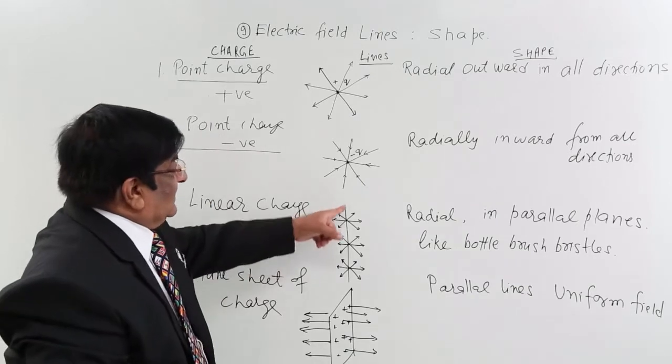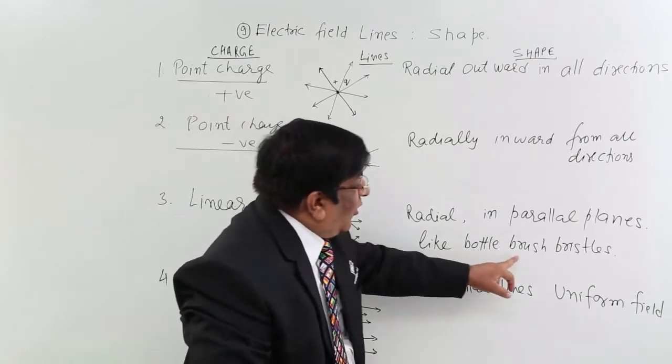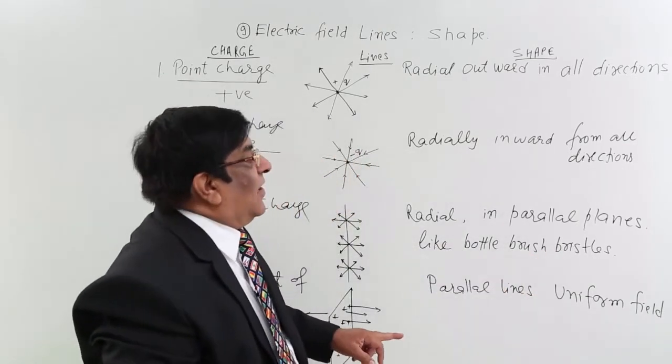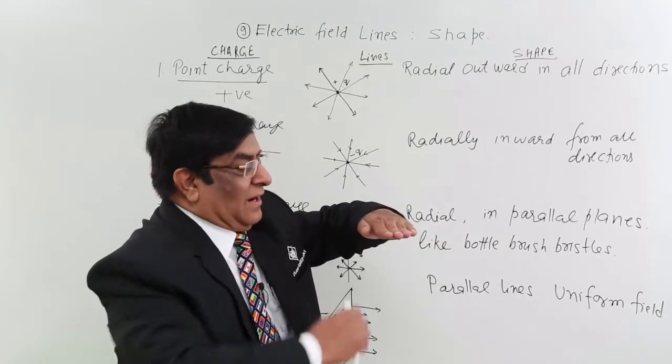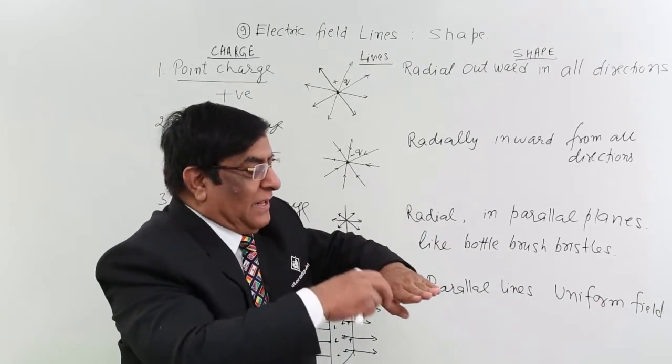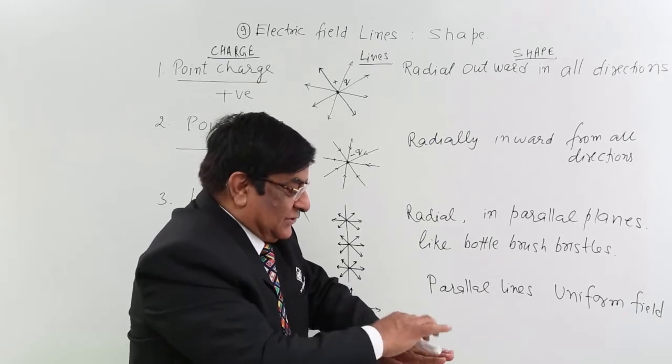Now, if the charge is linear, then it is like bottle brush bristles. How do we define it? The parallel planes. In one parallel plane, the lines will be in all the directions.